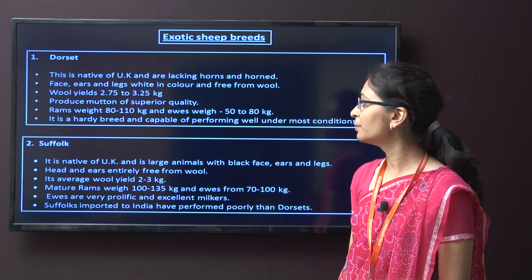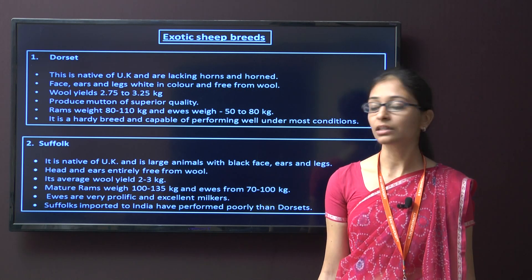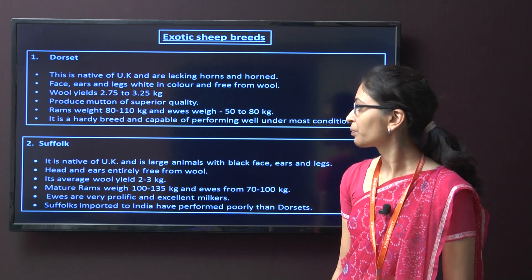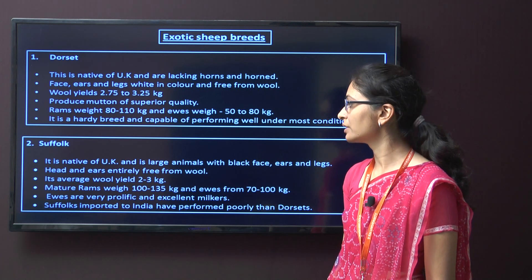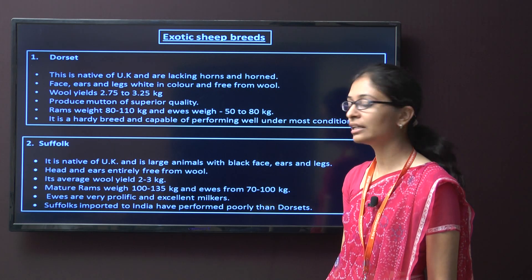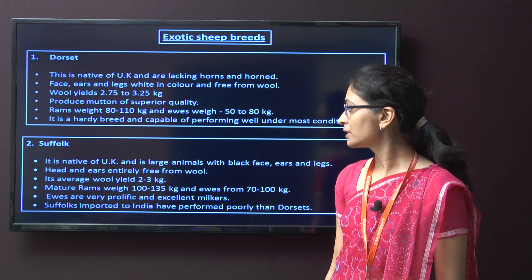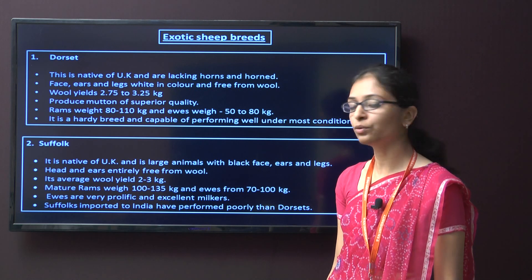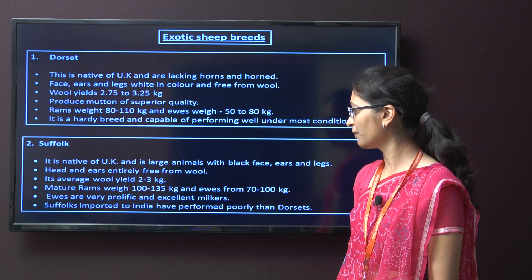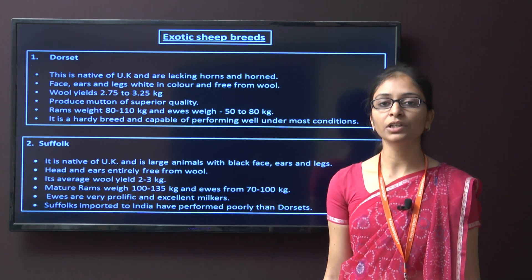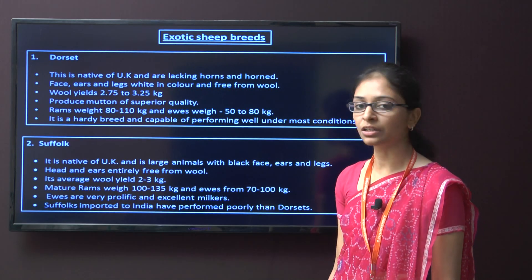This breed is hardy and capable of performing well under most conditions. The next exotic breed is Suffolk. It is native to the UK, a large animal with black face, ears, and legs. The head and ears are entirely free from wool. The average wool yield is around only 2 to 3 kg. The mature ram weight is around 100 to 135 kg and ewes around 70 to 100 kg. The ewes are very prolific and excellent milkers.